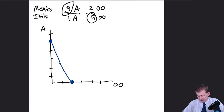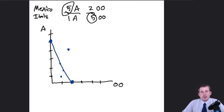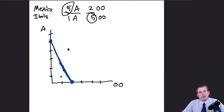Mexico could produce any value along that line — for example, one olive oil and about two and a half avocados. They cannot produce beyond the line, like two olive oils and four avocados — that's infeasible given their production limits. They could produce below the line, like one olive oil and one avocado, but that means they're not using their full resources.